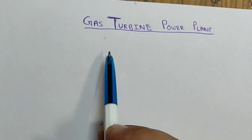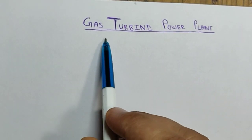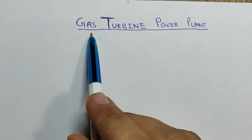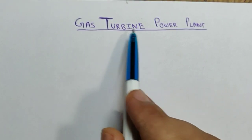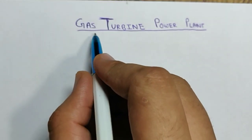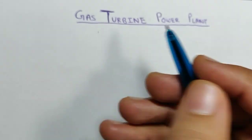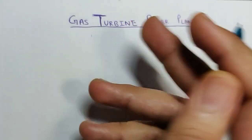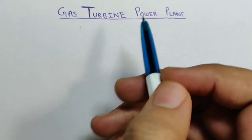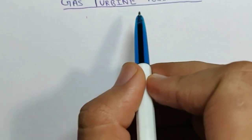Hello guys, welcome to another tutorial by Supreme Tuber. In this video we will be discussing the layout and working principle of gas turbine power plant. As the name suggests, gas turbine power plant is operated by using gas — gas is the working medium of the gas turbine power plant. Gas is used to move the prime mover, which is the turbine, to produce electricity.